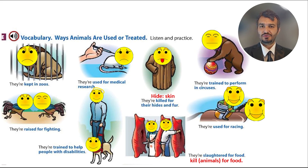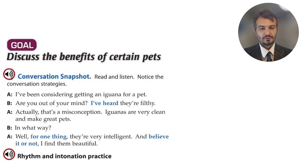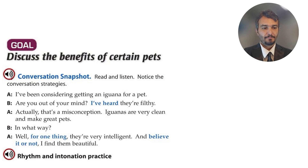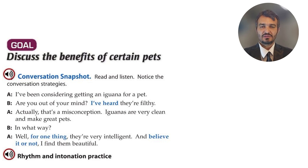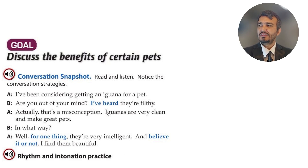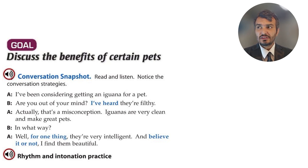All of these examples are really controversial. I am not going to express my own ideas — you need to talk about it. Maybe in the classroom we can discuss this. Another conversation: discuss the benefits of certain pets. A says: 'I've been considering getting an iguana for a pet.' 'I've been considering' is a fixed phrase — after it, add a verb with -ing: 'I've been considering buying a new house,' 'I've been considering traveling to another country,' 'I've been considering eating that pizza.'